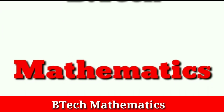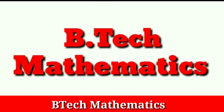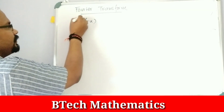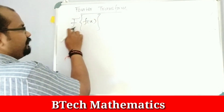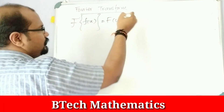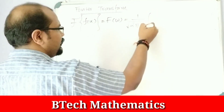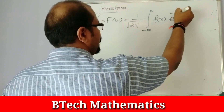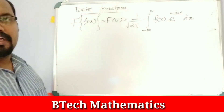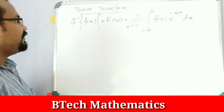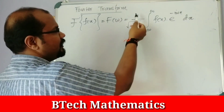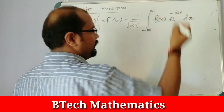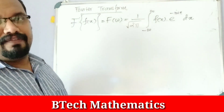We will learn how to do the Fourier transform. The Fourier transform of f(x) is denoted F(ω), and is equal to 1 over root(2π) times the integral from minus infinity to infinity of f(x) times e raised to minus i·ω·x dx.